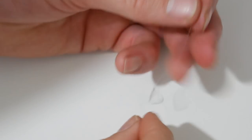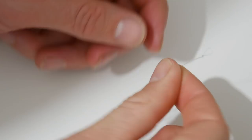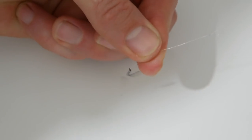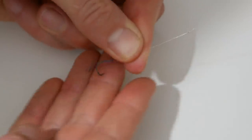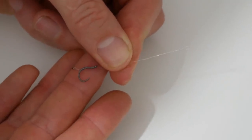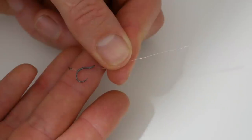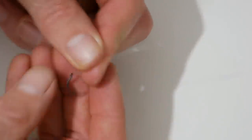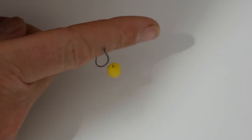There we go trim that down for you so there we have a two inch maybe two and a half inch maximum method feeder hook length. I'll put a little wafter on for you, we've got one here just to show you how everything hangs in line.